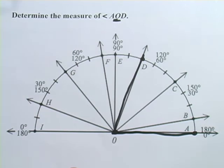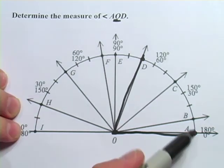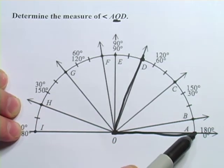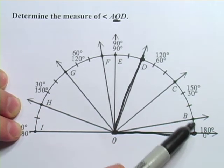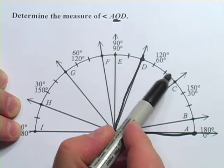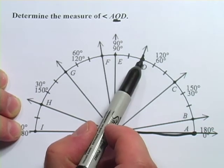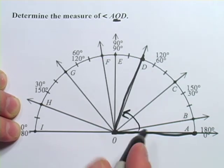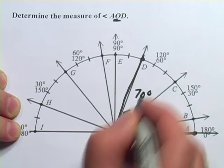This one should be a little easier to measure. Actually, we don't even need to use our protractor, because the protractor's already printed up here, right? Starting at 0, and then we're going up to, this would be 10, 20, 30, 40, 50, 60, 70. So it looks like angle AOD, this angle right here, has a measure of 70 degrees.